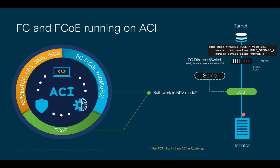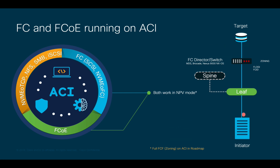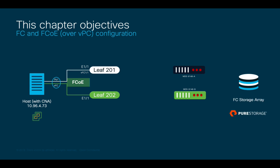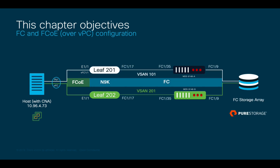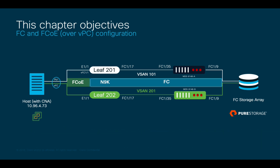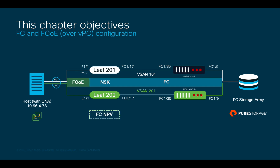Full Fiber Channel forwarding functionality and zoning on ACI will be available in a future release, so stay tuned. Today, I will show you how to connect a VMware server running FCoE through a CNA to its Fiber Channel storage array — in our case, a Pure Storage. You could also run end-to-end Fiber Channel from an HBA, or FCoE if you wanted to. In our scenario, we will be configuring a mixture of Fiber Channel and FCoE on ACI to show both protocols, and zoning will be defined on a couple of MDS switches where my storage array is connected.